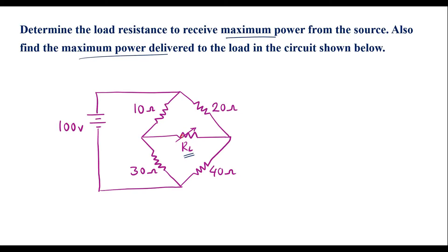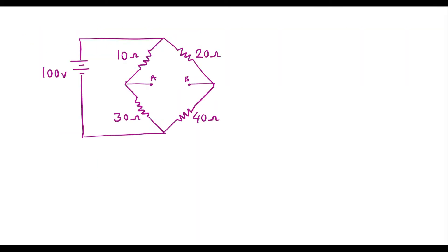In maximum power transfer theorem, first we need to remove this load from the circuit. So the circuit looks like this — here there was a load resistor that I have removed. Now I will find the voltage between these two terminals. The voltage between these two terminals is known as VOC, or open circuit voltage.